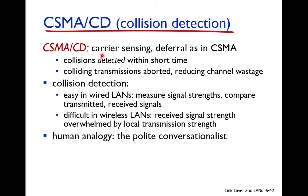This is called Collision Detection — CSMA/CD. Before transmitting, the node senses the medium (carrier sense). If another node is transmitting, it will not transmit. If the medium is free, it starts data transmission. While transmitting, it still senses the medium. If a collision is detected within the short time the packet is being transmitted, every node that detects the collision stops its transmission.